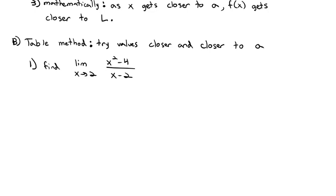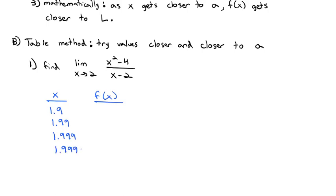If I were to just try and find what 2 actually equals in this function, it ends up being undefined — there's nothing at 2. But we're not interested in what's actually happening at 2; we're interested in what should be at 2, even if it's not. To set this up, we'll make a table with x values getting closer and closer to 2: 1.9, 1.99, 1.999, and 1.9999.